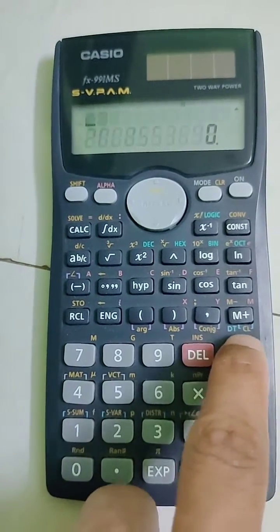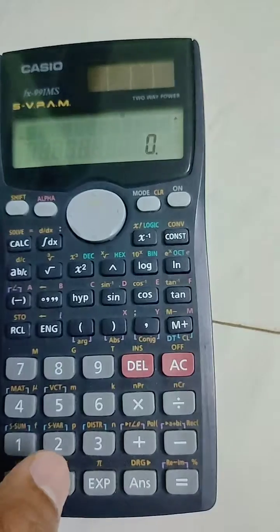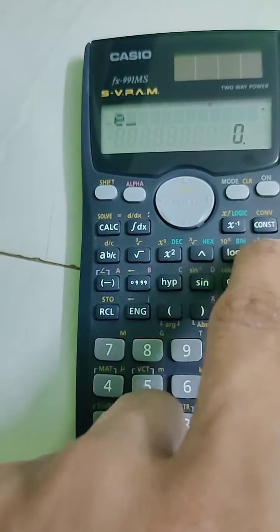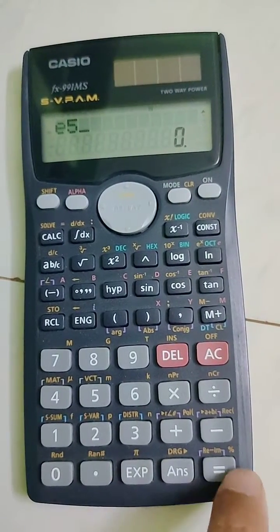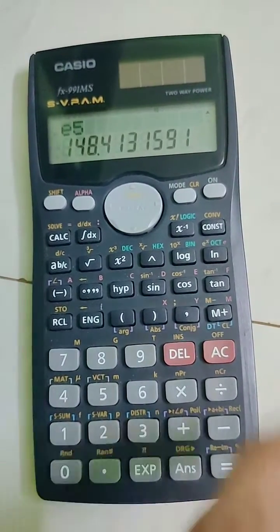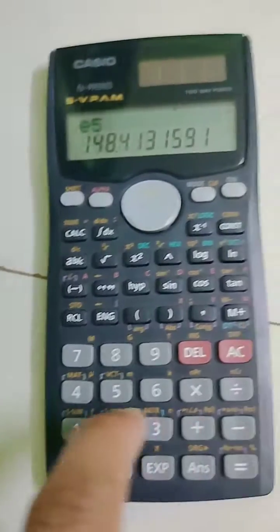Check again. I have to calculate e to the power of 5, so Shift, ln, and then 5, and then equal. This is equal to 148.41. Okay.